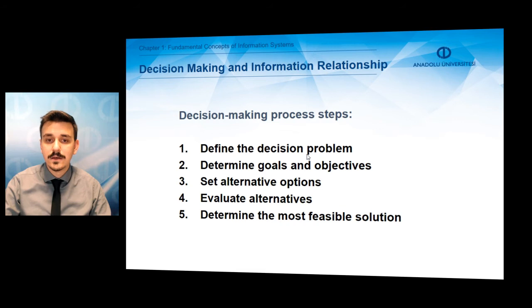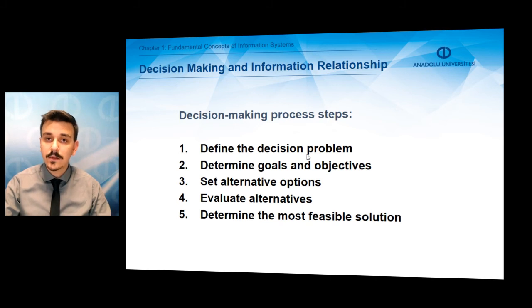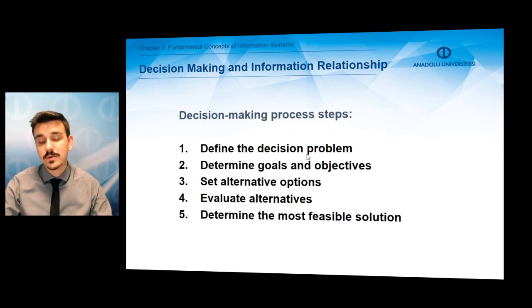Decision-making in its simplest definition is the selection of one of at least two alternatives that is most suitable for the purpose, and it has five fundamental steps. Firstly, we must define the decision problem and determine our goals and objectives to be reached and set the alternative options and evaluate those alternatives. And finally, we must determine the most feasible solution and make a decision.